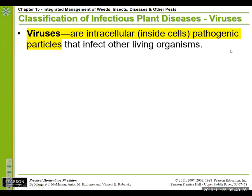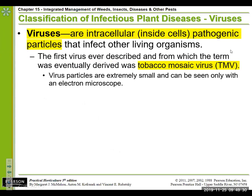Viruses are intracellular pathogenic particles that infect other living organisms. A classic case is tobacco mosaic virus — the first virus ever described — which causes abnormal mottling in the leaves of plants in the same family as tobacco, like tomatoes, peppers, eggplants, and potatoes. The issue with viruses is that they're not living, so there is no pesticide that can control them. We have to try to prevent them. You can't see virus particles — they're microscopic, and you need an electron microscope to see them.